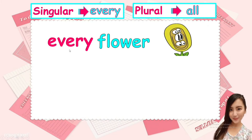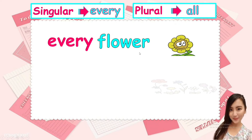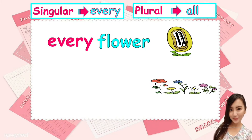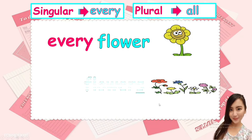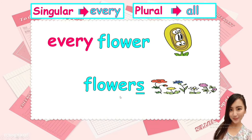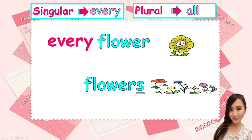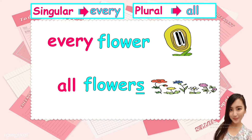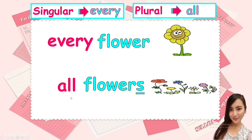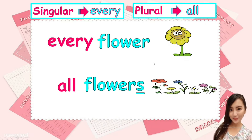Please repeat after me: every flower. Next. There are more than one flowers. We say flowers, it's plural. So we use all. All flowers. Every flower. All flowers. We use every for singular nouns and all for plural nouns.